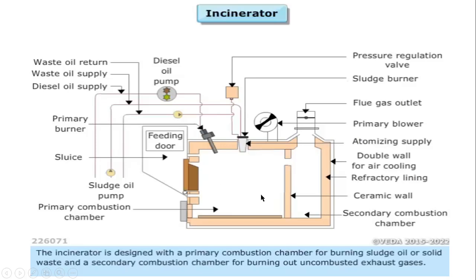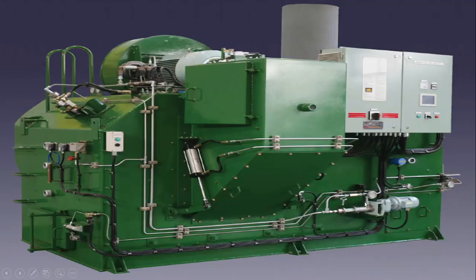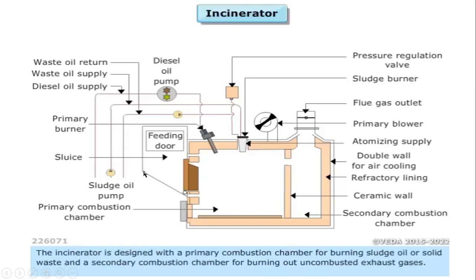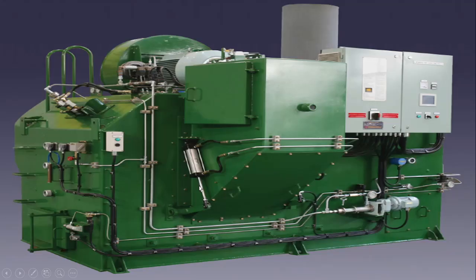The primary burner is assisted with the help of a diesel oil pump in order to ensure proper combustion takes place inside the incinerator. The diesel oil will first come, ignite, and help to maintain a sufficient temperature. After that, the sludge oil will come and it will start burning the sludge. Here you can see the sludge oil pump, the primary burner, the primary blower, and the exhaust. This is the primary chamber with a side glass and secondary chamber with a side glass. This is the feeding door or sludge door for feeding solid waste.